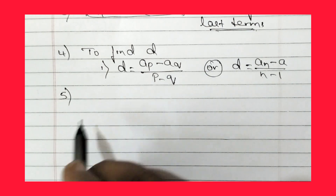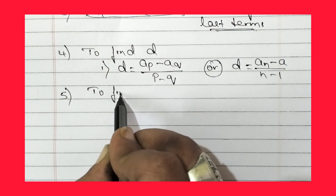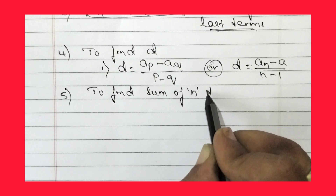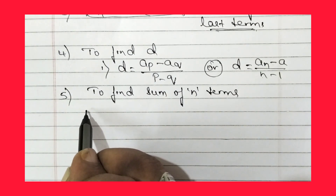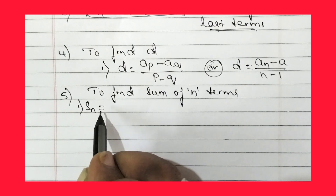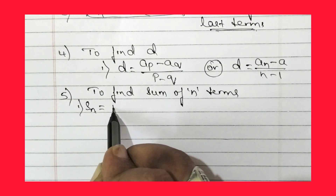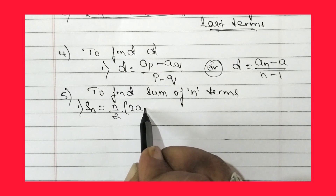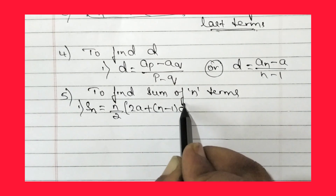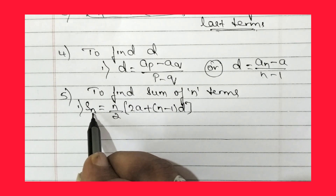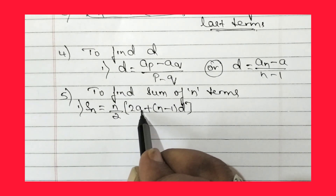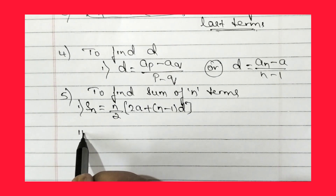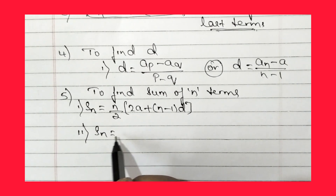The fifth formula is to find the sum of n terms. We can use: Sₙ = n/2 × (2a + (n-1)d), where Sₙ is the sum of n terms, n is the number of terms, a is the first term, and d is the common difference.